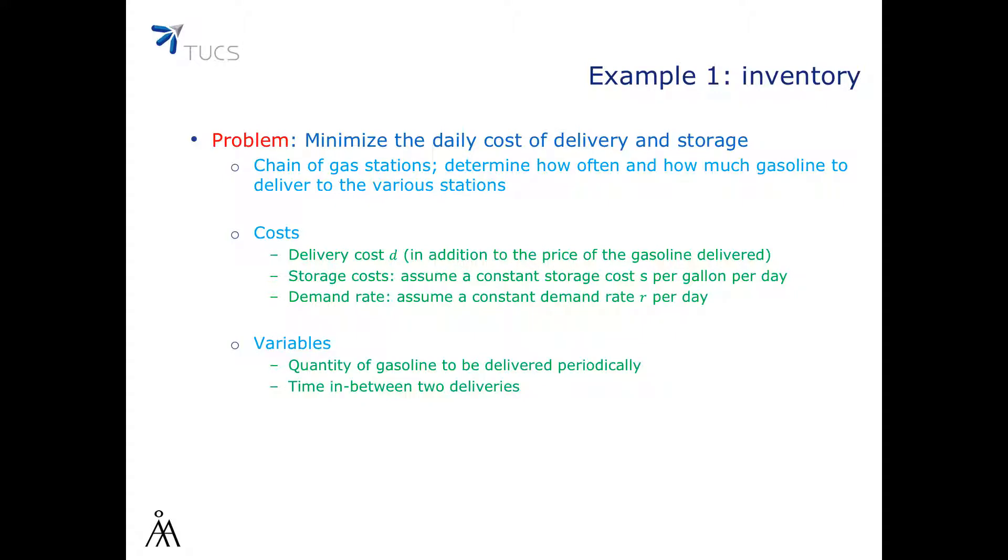Here are the variables. We want to know about the quantity of gasoline to be delivered periodically and we want to know about the time in between two deliveries. And the objective, obviously, is to minimize the daily storage and delivery costs and of course, never run out of gasoline.